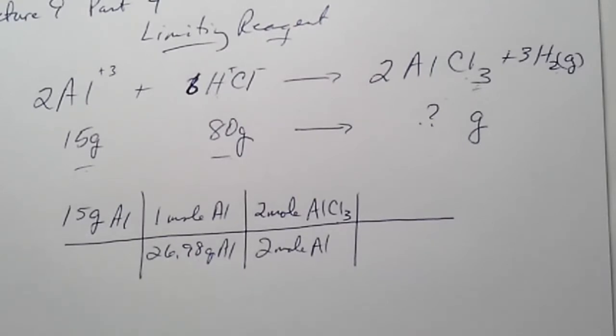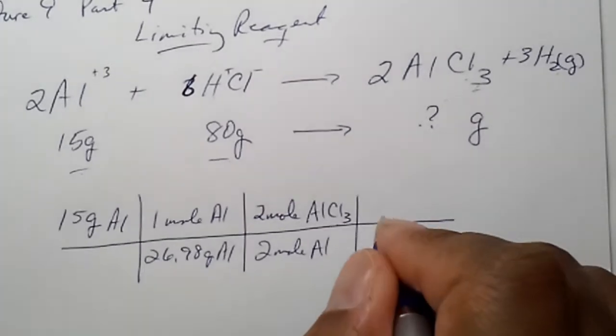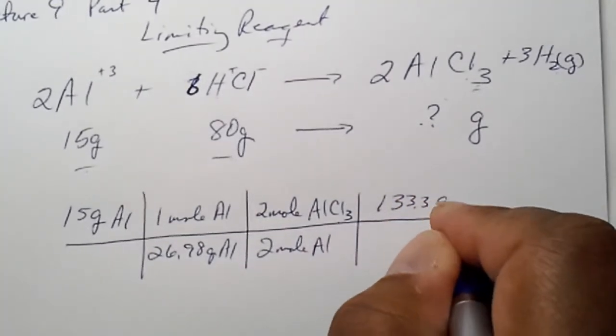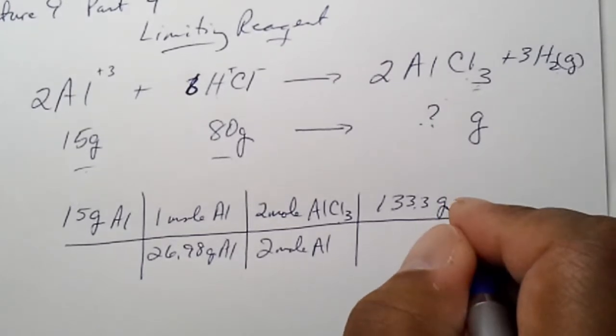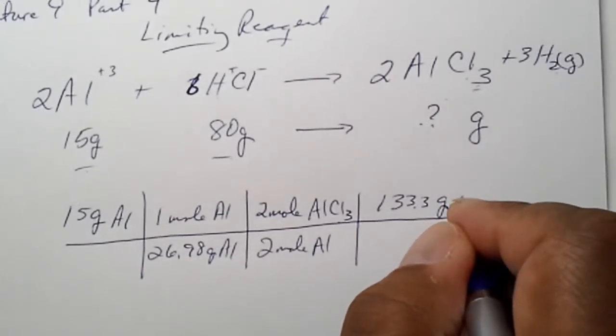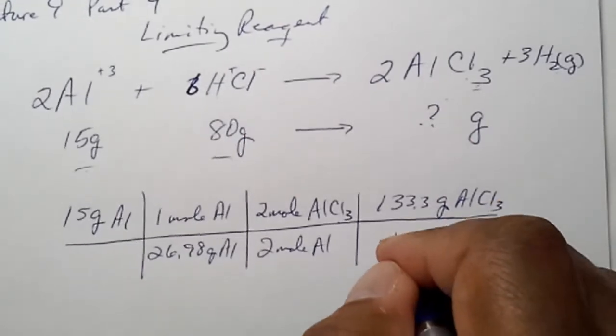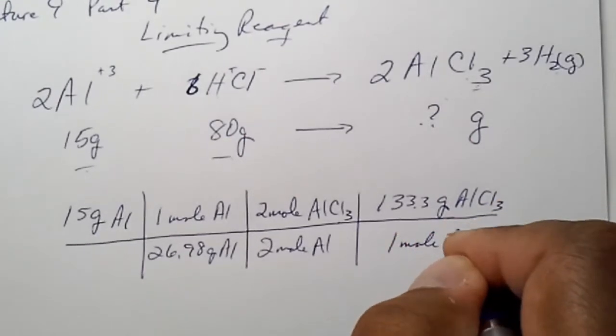And aluminum, we said it was twenty-six point nine-eight. So, we add three chlorides plus the aluminum together. We get a hundred and thirty-three point three grams of aluminum chloride per mole of aluminum chloride.